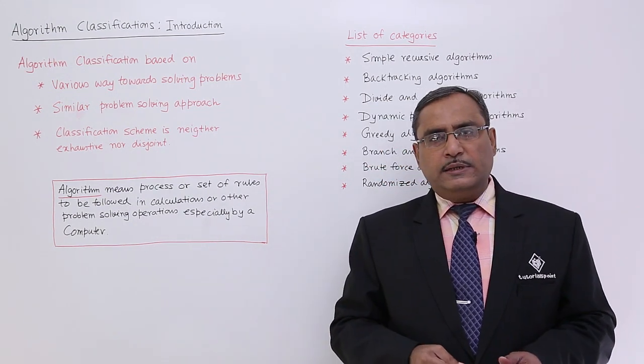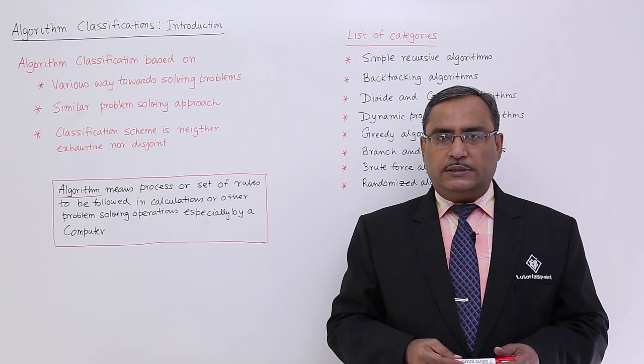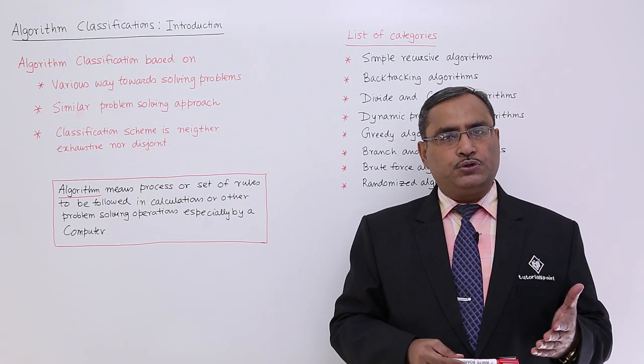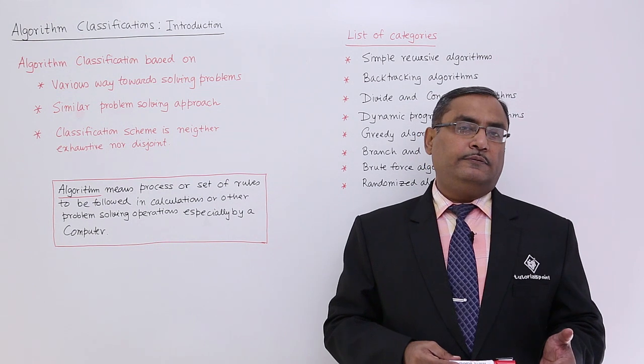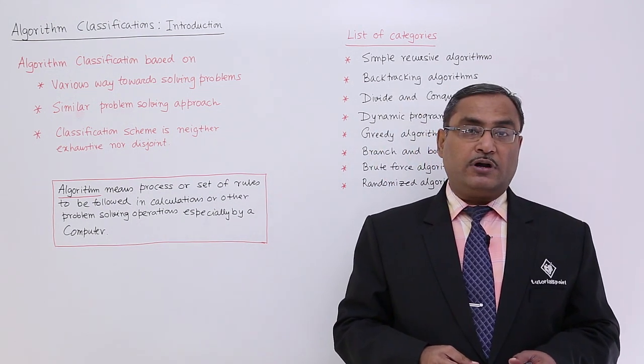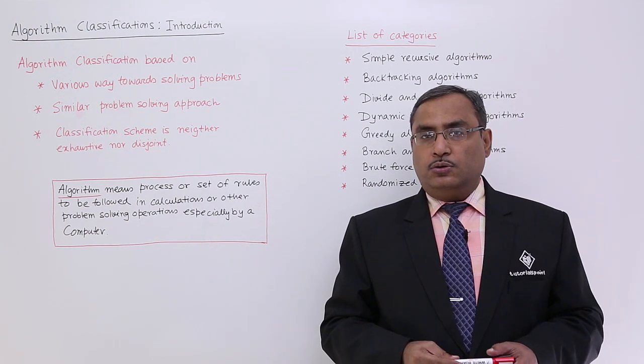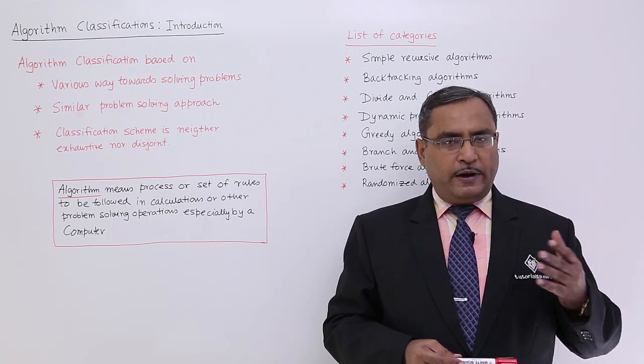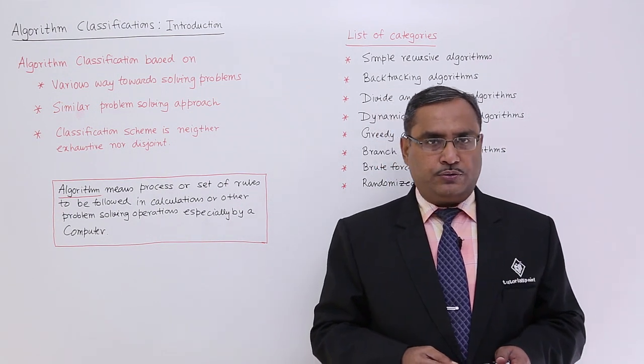We know that algorithm has five properties: it will have some inputs, outputs, and then finiteness, definiteness, and effectiveness of the instructions in the algorithm. We have defined that algorithm in other videos. Please watch that one also.